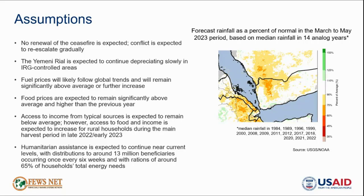Access to food and income from harvesting activities along the production and marketing chain will increase during the main harvest period lasting through early 2023, decline seasonally again following that, and then increase seasonally following the start of the first rainy season and agricultural activities beginning in March. Humanitarian assistance is expected to continue near current levels with distributions to around 13 million beneficiaries once every six weeks and with rations of around 65%.